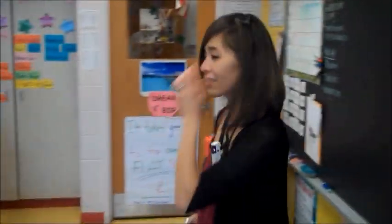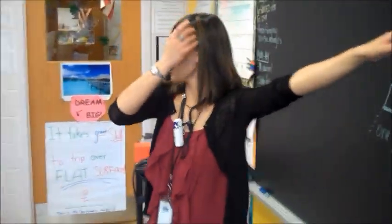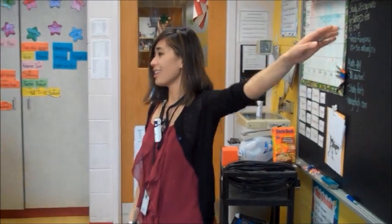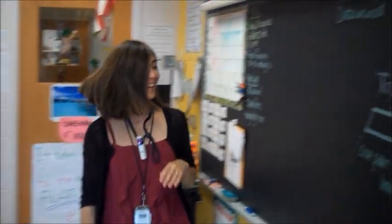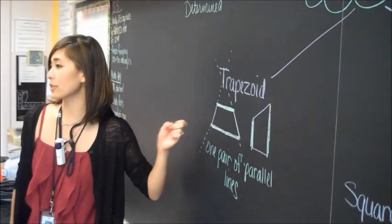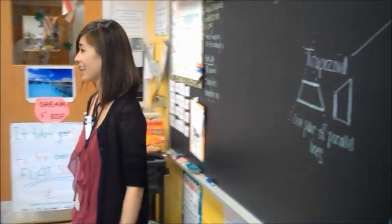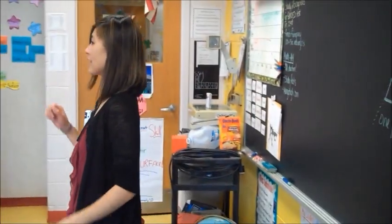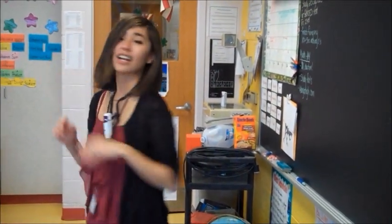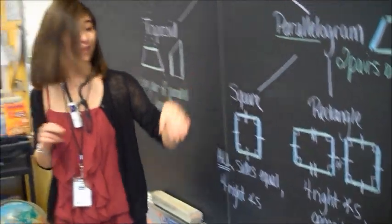All right, so like I was saying, boys and girls, quadrilaterals are polygons that have how many sides? Four. Good. There are different ways that we can classify them. A trapezoid is one way — it has how many pairs of parallel lines? One. The other pair of lines? Intersect. Good. The other way is a parallelogram — it has how many pairs of parallel lines? Two.